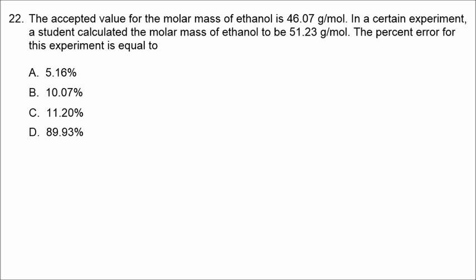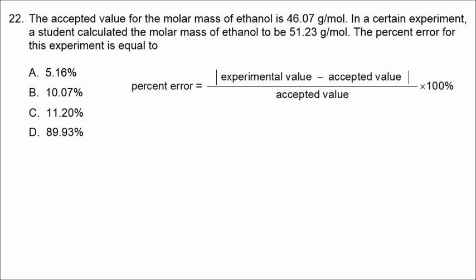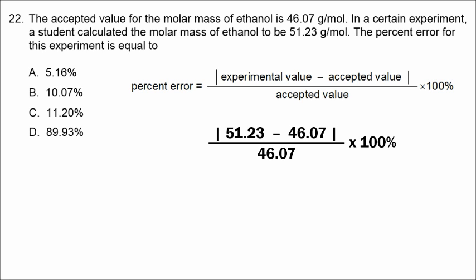In number twenty-two, we use the percent error formula: the absolute value of (experimental value minus accepted value), divided by the accepted value, times 100. The accepted value is 46.07, and the experimental value is 51.23. Calculating that gives us 11.20%, so the correct answer is C.